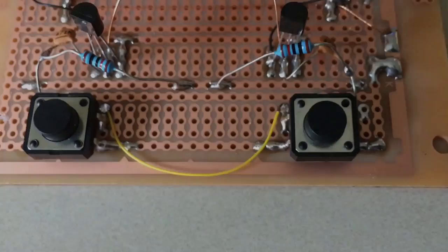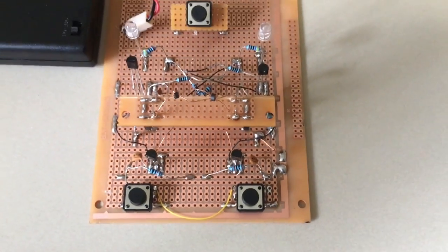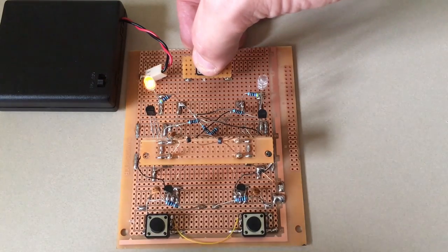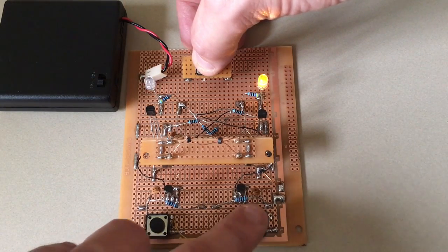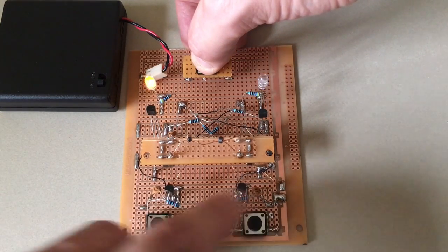And finally, connecting the two inputs together to configure it as a toggle flip-flop. With the two inputs connected together, pressing either button will be the same as pressing both buttons at the same time and toggle the output.